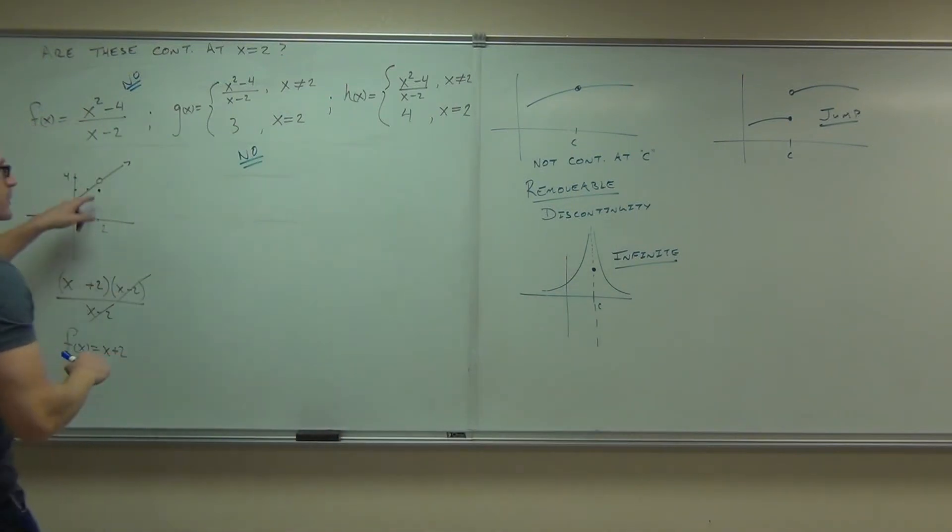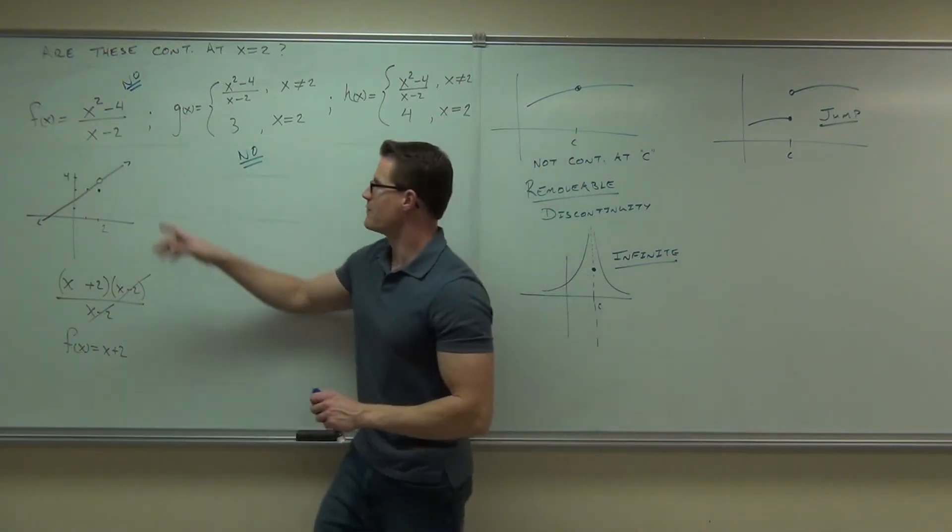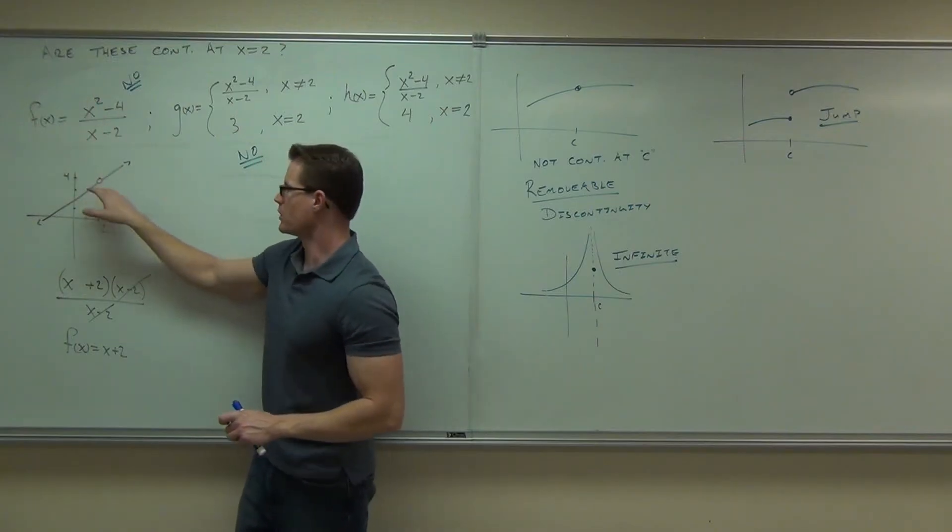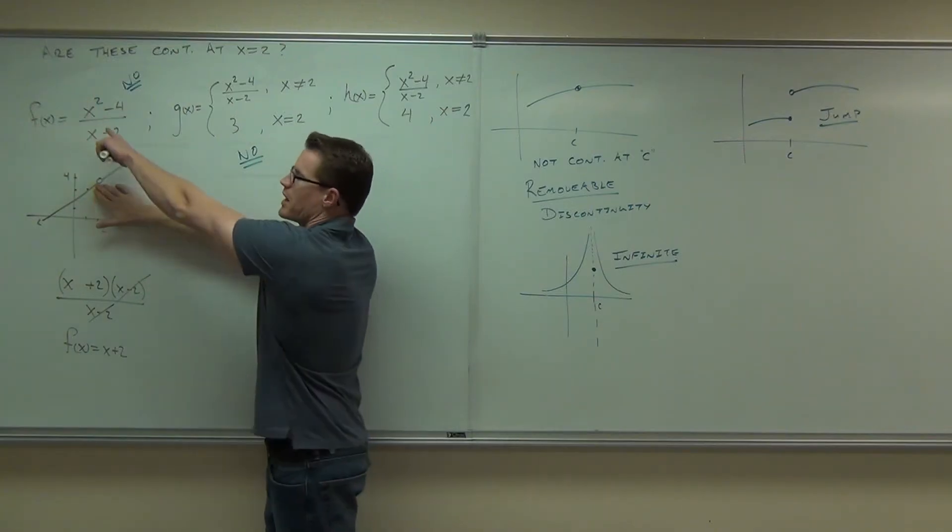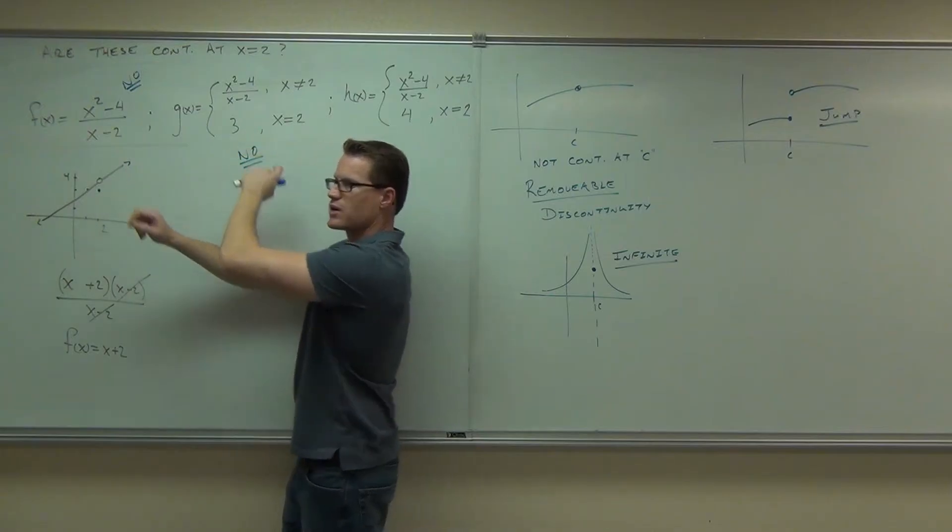This would be a removable discontinuity. I'm going to show you why right now. So firstly, we tried a point, right? We have this function and we have this hole in it. So if I cover that up, this is my original f of x. True? I tried to plug in a point. Did I make it fit right? No, it doesn't fit right. Let's try the next one.